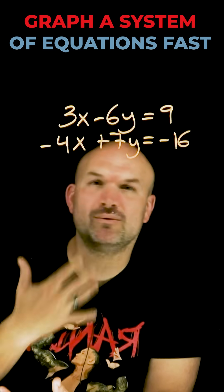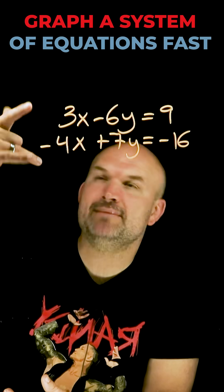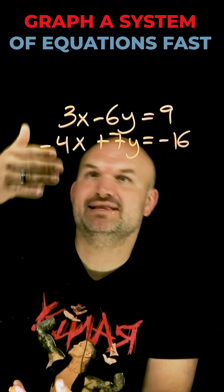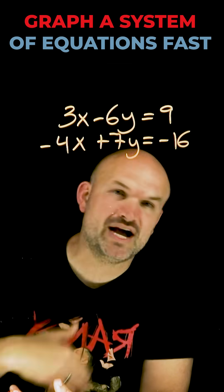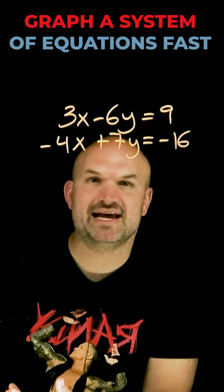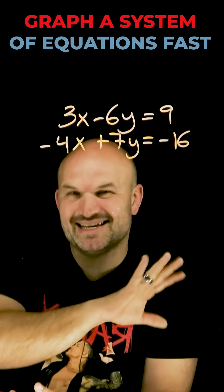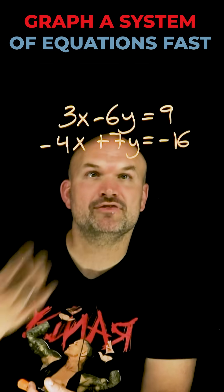But when I have an equation like this, I don't want to go through elimination. I don't want to multiply both equations by a scalar, then use addition or subtraction to remove one of the variables and solve. What I like to do is a variation of Cramer's rule.